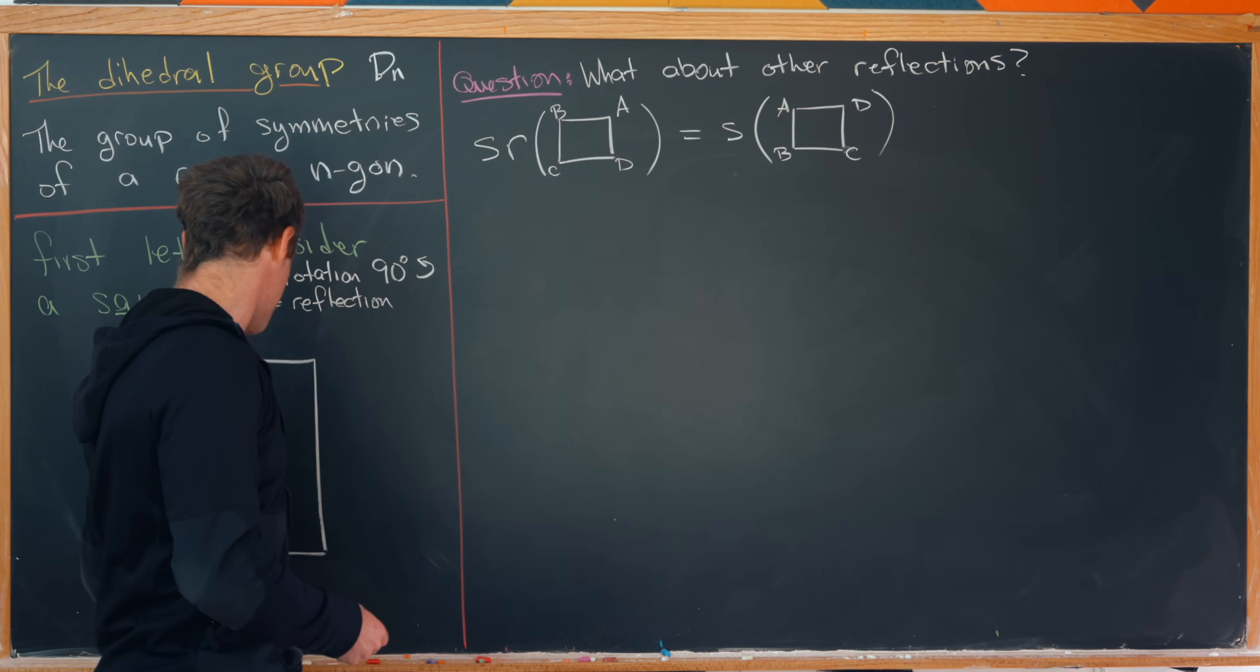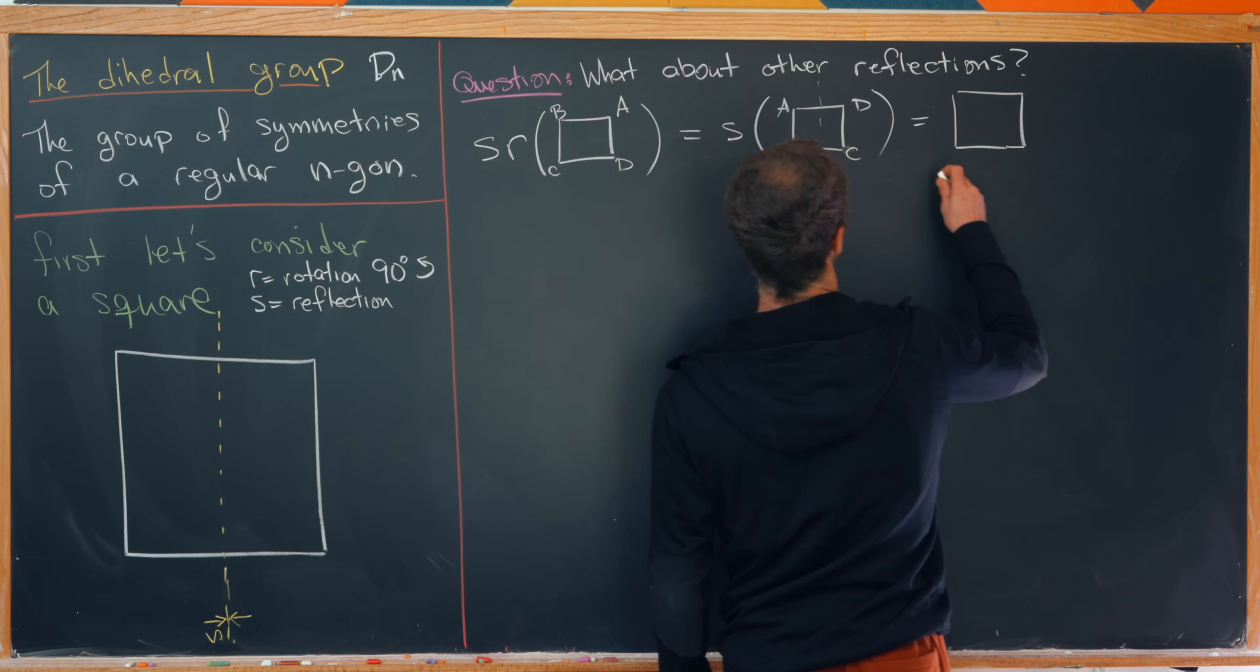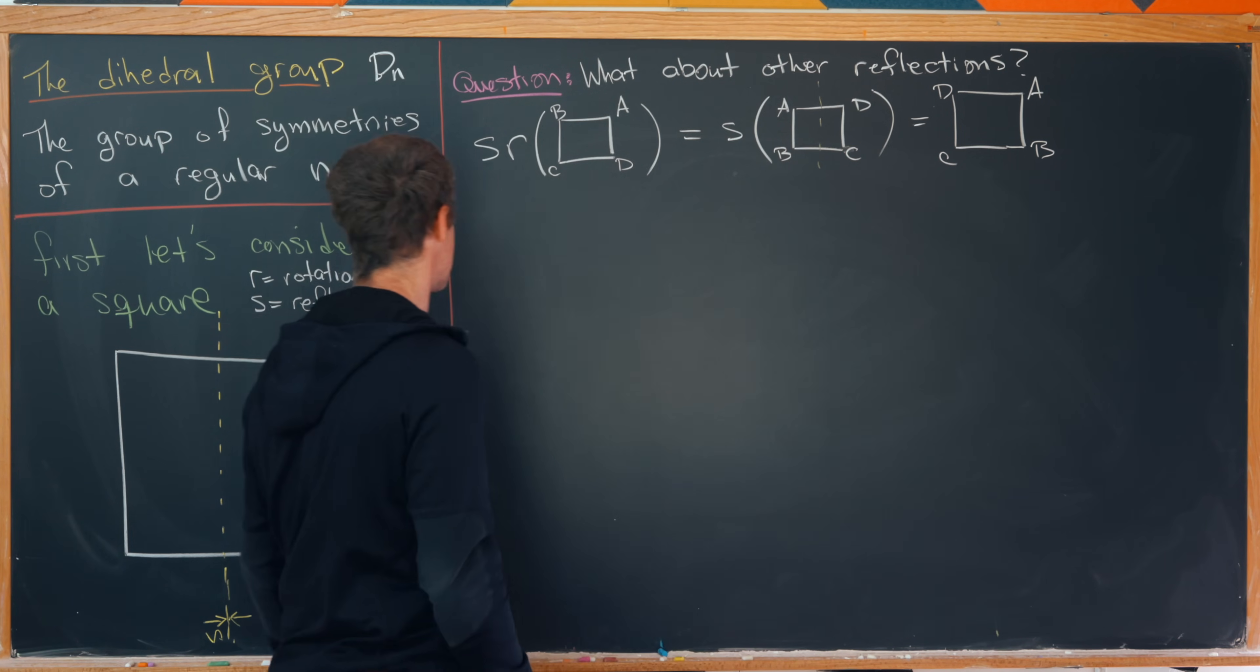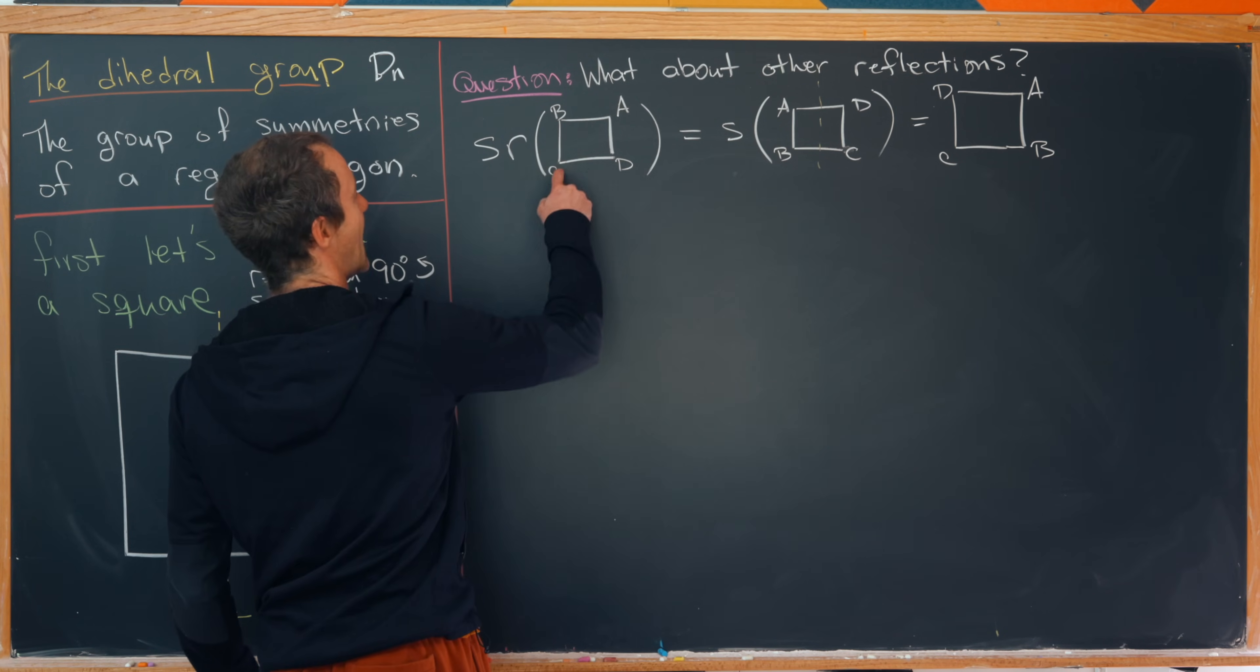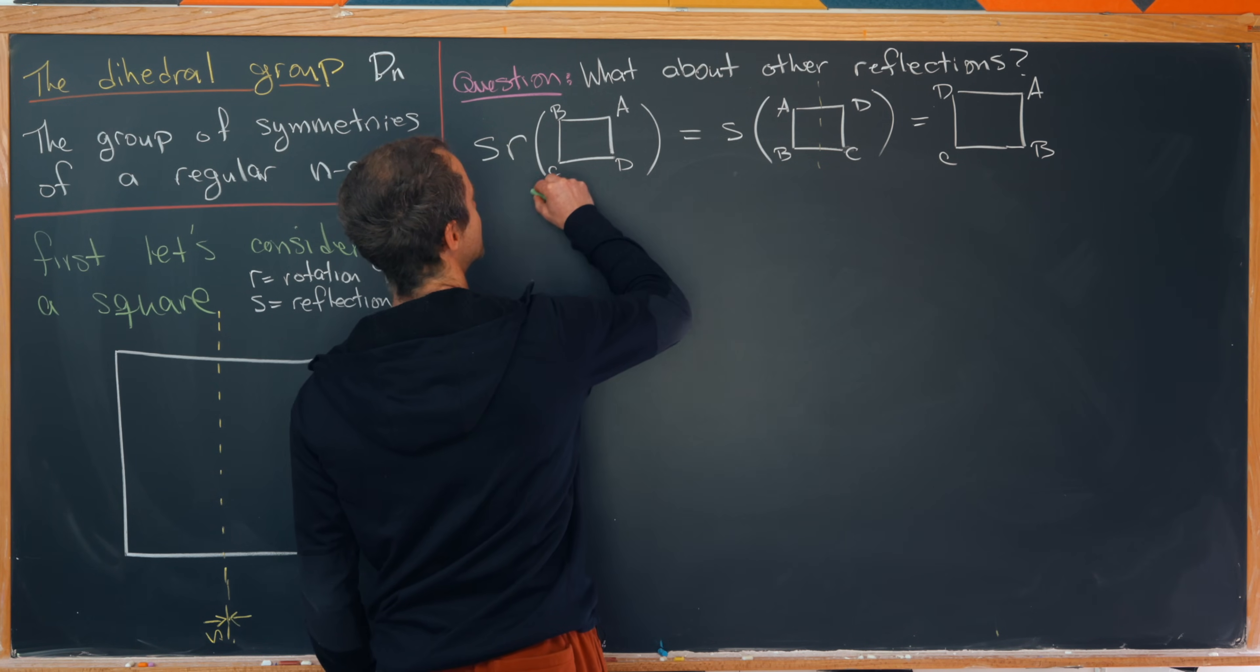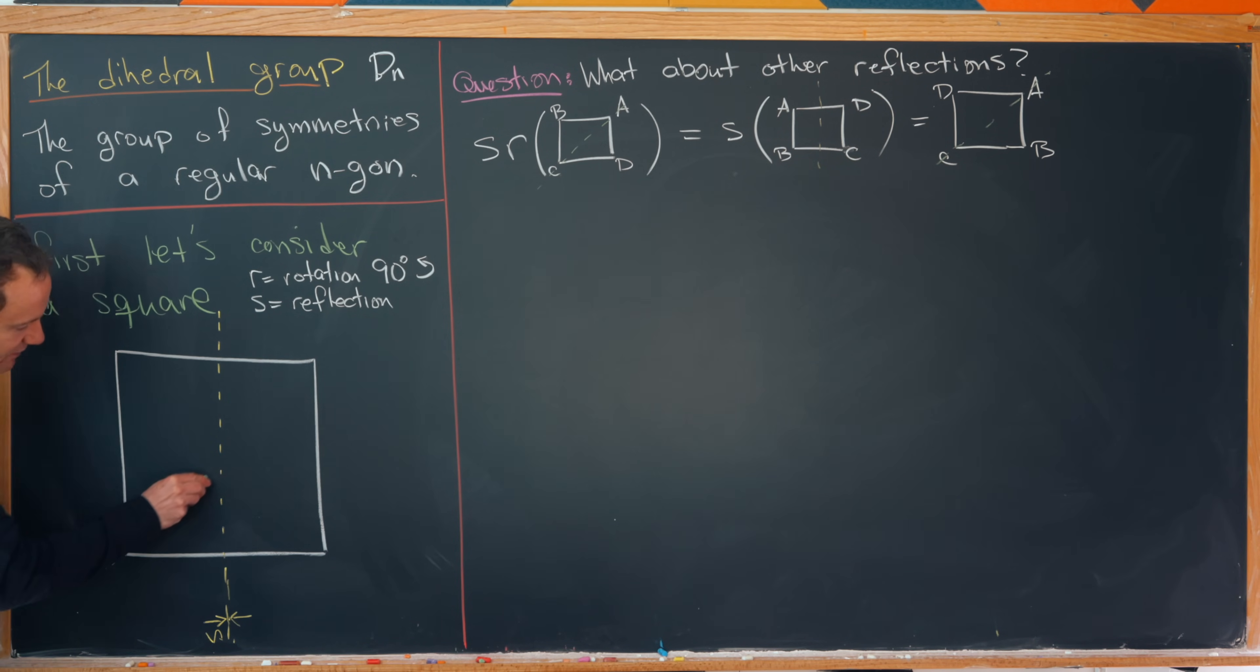So that means we'll have s acting on the square but now the vertices have moved. We have a, b, c, d like that. And now let's reflect about the vertical axis. Remember that's what s is telling us to do. And what will that give us? Well, it's a square again but now we have d, a, c, b. So something like that.